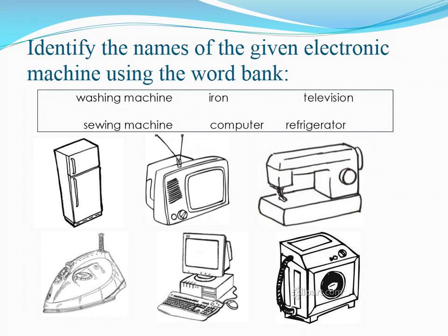Next picture is Iron. The spelling of Iron is I-R-O-N, Iron. And the next is Computer. Very good! The next picture is Computer. The spelling of Computer is C-O-M-P-U-T-E-R, Computer. Very good! The last electronic machine is Washing Machine. Very good! The spelling of Washing Machine is W-A-S-H-I-N-G M-A-C-H-I-N-E, Washing Machine.